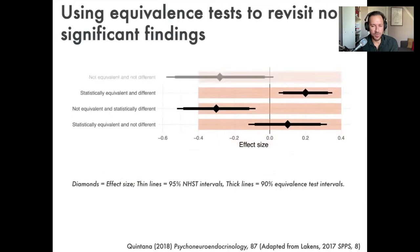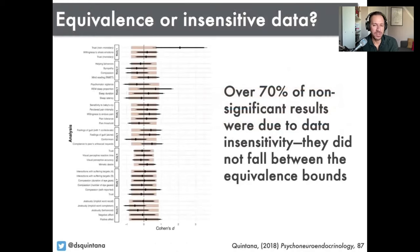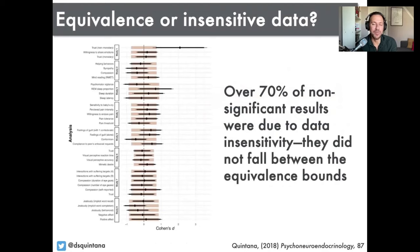There are a few different equivalence testing approaches — you can check out the paper for details. What was found within this particular study was that over 70% of non-significant results were better explained by data insensitivity, because they did not fall within the equivalence bounds. This is the sort of analysis you can do for your own research field. If non-significant results are being used to claim lack of support for hypotheses, it's worth examining whether that's due to data insensitivity or whether the data are actually equivalent.